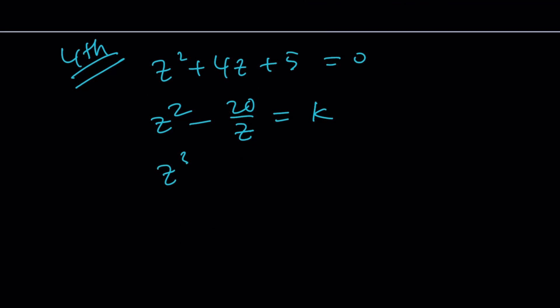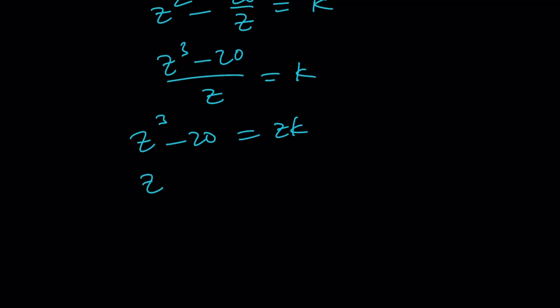And boom. Use the power of polynomials. P-O-P. Power of polynomials. How do you do that? Cross-multiply. And that becomes zk. And now we got an equation. z cubed minus kz minus 20 equals 0.